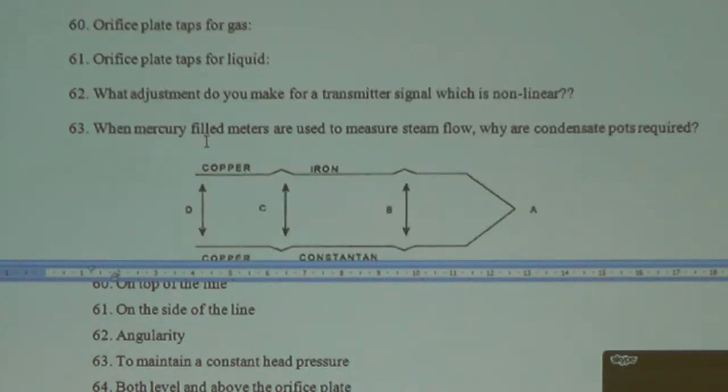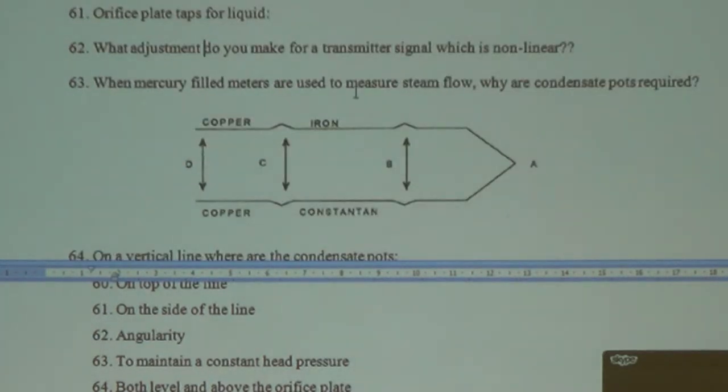What adjustment do you make for a transmitter signal which is non-linear? Mark this question, this is something which has been asked. You do angularity correction, linear calibration or angularity calibration, right?